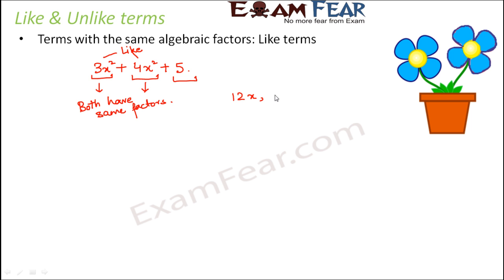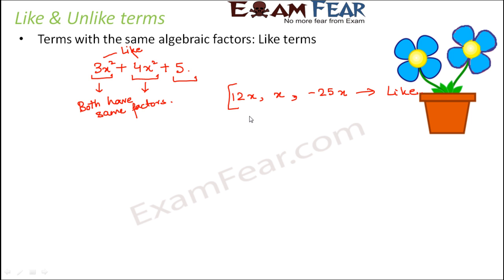Terms like 12x, x, and minus 25x are all like terms, because all of them have x as their algebraic factor. Similarly, 12, minus 25, and 1 are all like terms because they do not have any algebraic factors — that is the common thing they share.